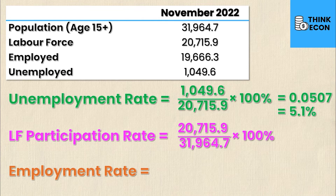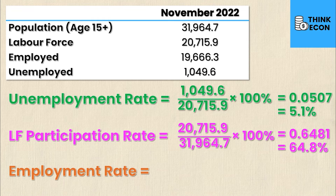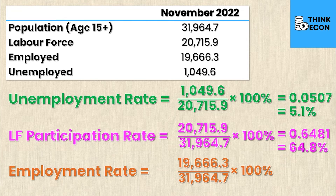For the labour force participation rate, the labour force of 20,715.9 is divided by the total working age population of 31,964.7, giving a decimal of 0.6481, which is 64.8%. For the employment rate, 19,666.3 employed divided by the working age population of 31,964.7 gives 0.6153, or 61.5%.